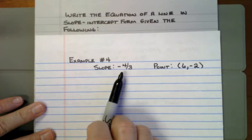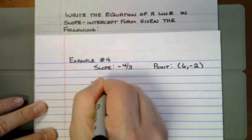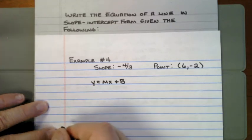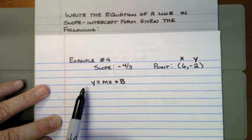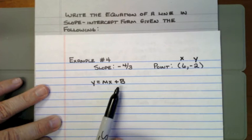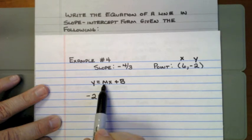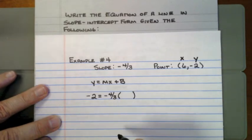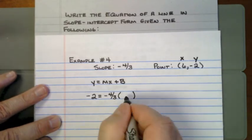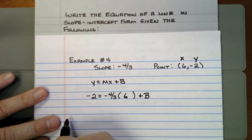Example number 4 — another one with a fraction as the slope. They don't give me the y-intercept, so I need to use y equals mx plus b to figure it out. A point consists of an x and a y. My y is negative 2, equal to m — the slope — which is negative 4 thirds, multiplied by my x value of 6, plus b. b stands for my y-intercept.